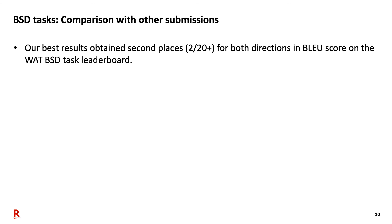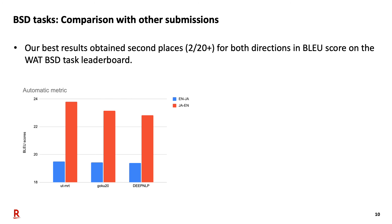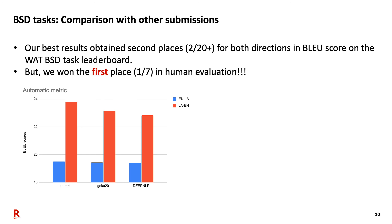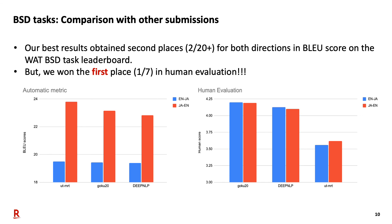Overall, we compare our experimental results with other submissions and found that our best results obtained by the MBART-25 fine-tuning model achieved second place for both directions in BLEU score on the WAT BSD task leaderboard. However, considering human evaluation, we won first place on the leaderboard. Based on these two result charts for automatic metric evaluation and human evaluation, we can conclude that our submission is more robust than the other two submissions.